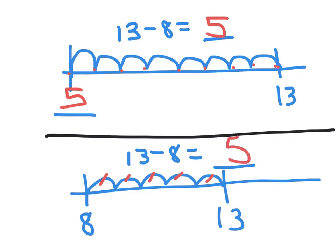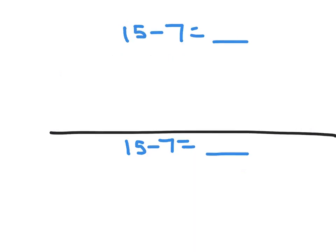So either way works, student preference. Here's the final example: 15 minus 7.